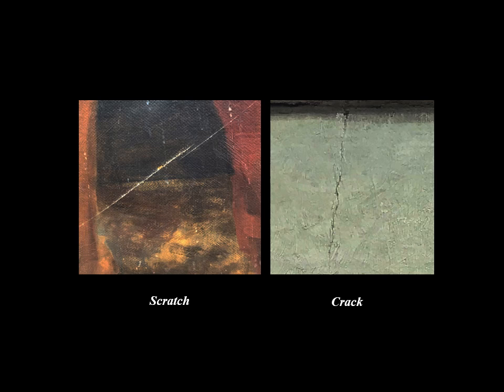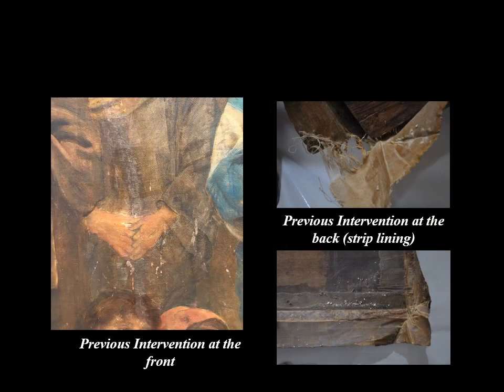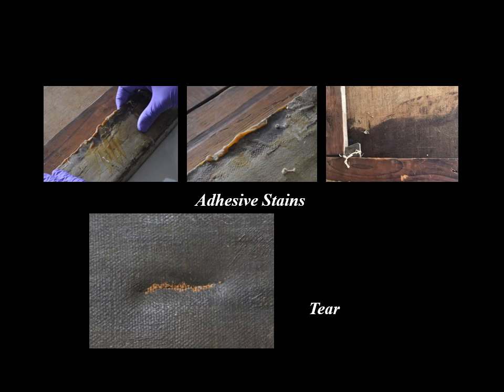Scratches at the bottom area and a crack at the top middle portion were also noticed. Previous interventions were observed at some areas on the front side. At the back side, the stretcher — an auxiliary support with expandable corners over which the painting canvas is stretched — was removed first. A previous strip lining was seen at all four edges of the canvas. Adhesive stains were present at all four edges, and as the fabric was brittle, tears had emerged at the bottom portion.